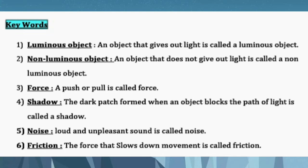Number 4: Shadow — The dark patch that forms when an object blocks the path of light is called a shadow. Number 5: Noise — Loud and unpleasant sound is called noise. Jho sound bahut loud hootay hain aur unpleasant hootay hain, usko hum noise bolte hain. Number 6: Friction — The force that slows down movement is called friction.